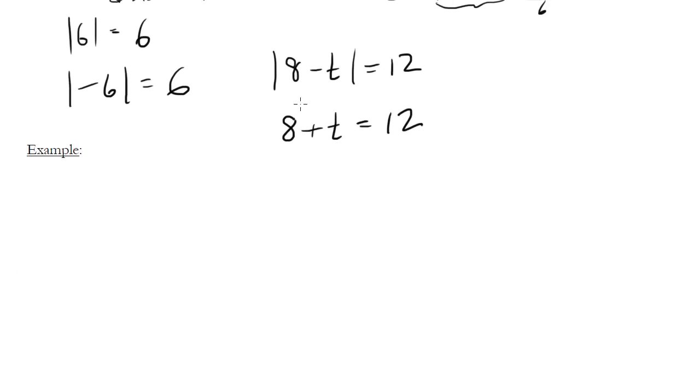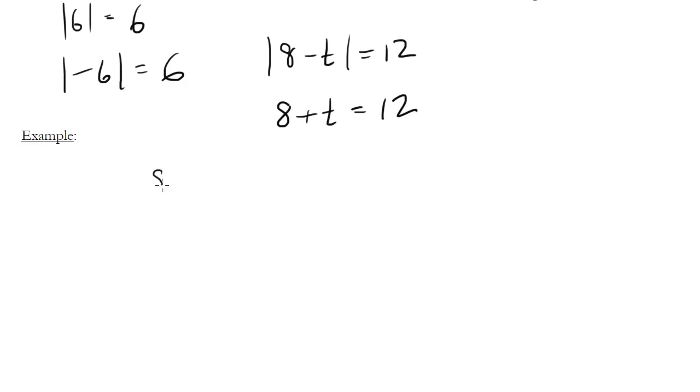Let's actually look at an example. How would I solve something like this one? So I have |8 - t| = 12. The method with these is you basically think of the two cases that will satisfy this expression.